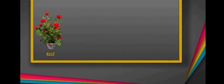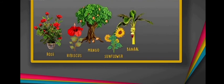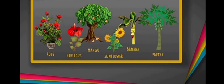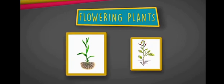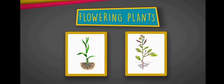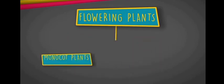Examples of flowering plants are rose, hibiscus, sunflower, mango, banana, and papaya. Flowering plants are further divided into two groups: monocot and dicot.